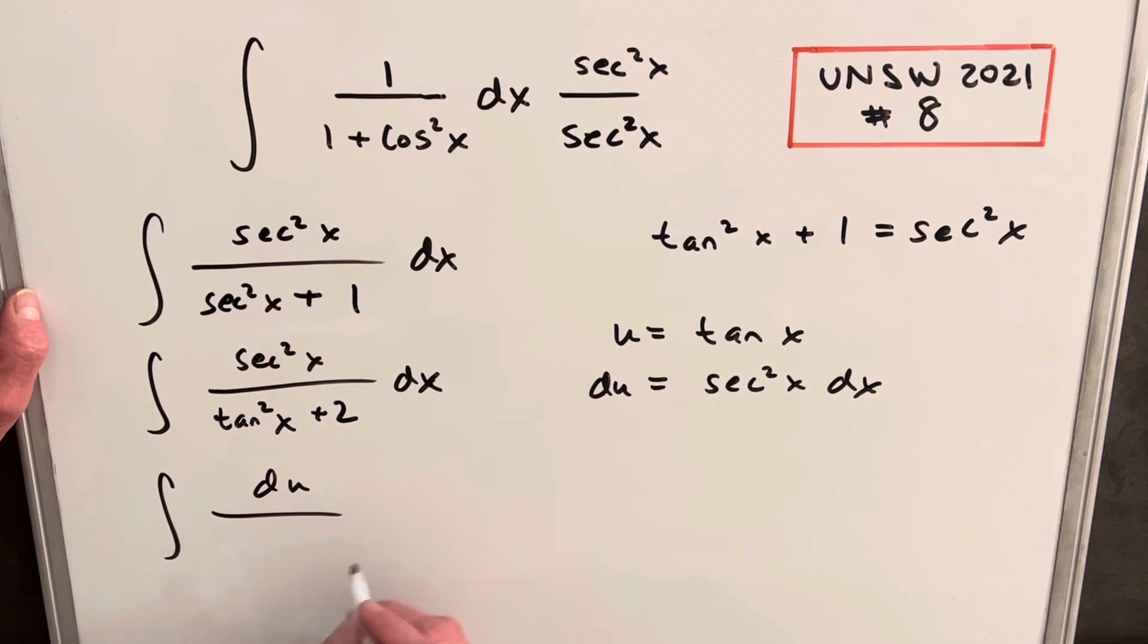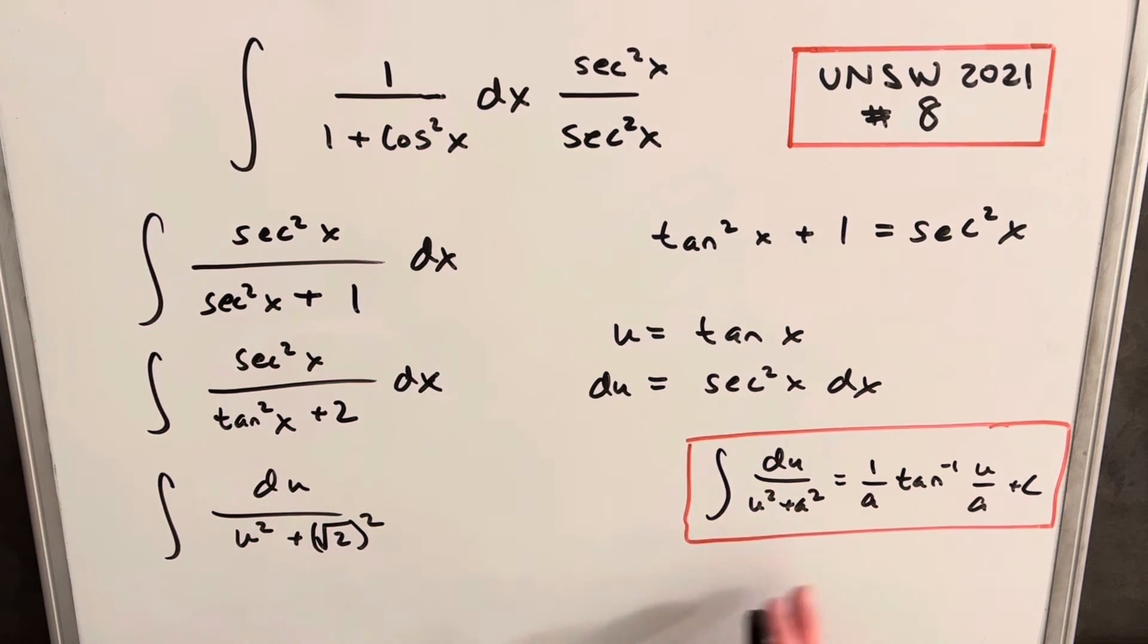We're going to have du over u squared plus two. And I'm going to write this as square root of two squared. And what this is going to allow us to do is use our arc tan formula that we have over here on the right. And what we're going to do, so for our a value, it's going to be the square root of two. That's why I did that.